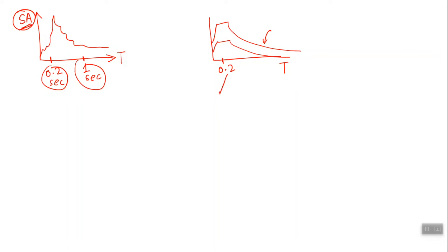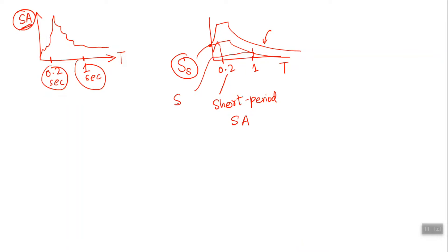The spectral acceleration value at 0.2 second is called short period spectral acceleration and is represented as S_S. The spectral acceleration at 1 second is represented as S_1. Nowadays these two numbers, S_S and S_1, have units of acceleration just like PGA, because they are accelerations — not of the ground, but of the structure, specifically the acceleration of a single-degree-of-freedom system having these two time periods. They are now used as the hazard parameter or ground motion parameter. Previously you needed to know the PGA value of your site; now you need to know S_S and S_1.